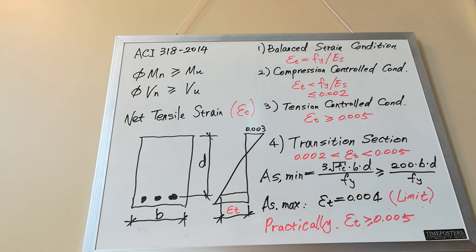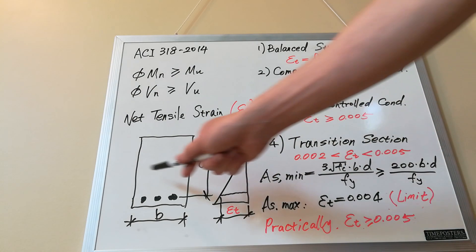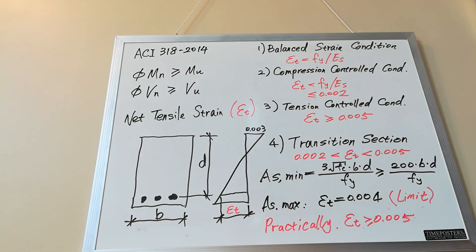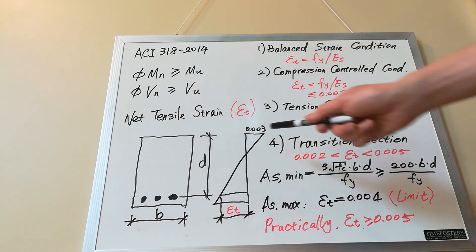As we know, concrete is strong in compression but weak in tension. That's why reinforcement steel bars are placed at the tension area of a section. Now here comes the first definition: net tensile strain epsilon t.